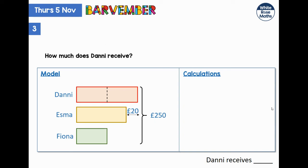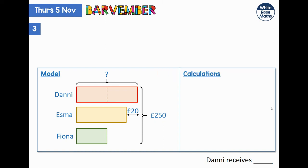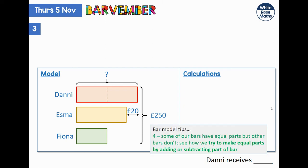How much does Danny receive? We've put our curly bracket in to cover those two parts of Danny's bar — there's our question mark. We've transferred everything from our question into our picture model. Now, a very frequent issue in bar modelling is that we see some of our parts are equal — Danny's two parts and Fiona's part give us three equal parts — but Esma's is not. One of our challenges is: can we try and make this into a problem just of equal parts? If we can, we should be able to convert this into a division or multiplication problem.